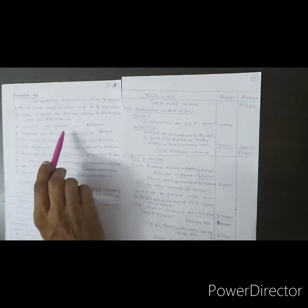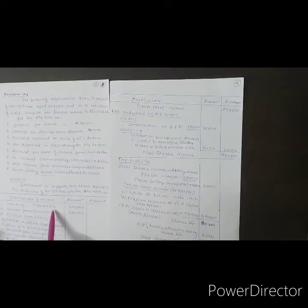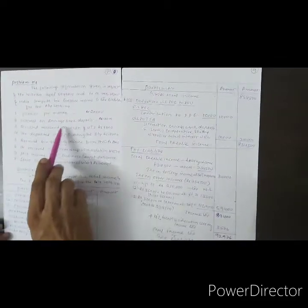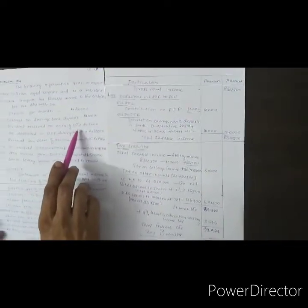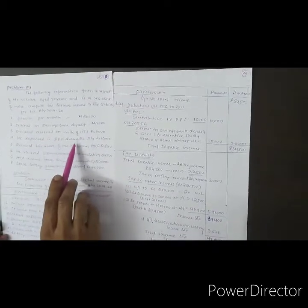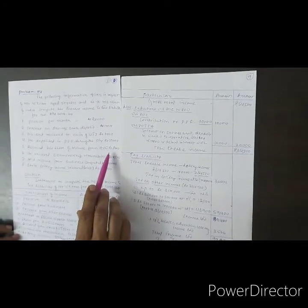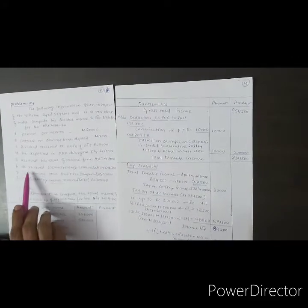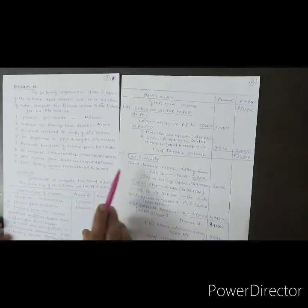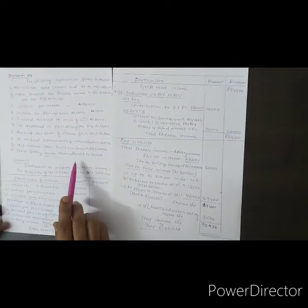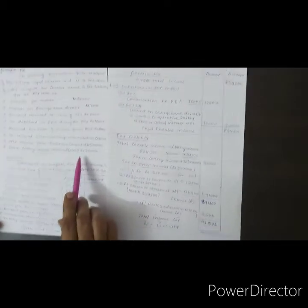Looking at the problem statement: pension per month is rupees 20,000, so annual pension is 20,000 into 12 months equals 2,40,000. Interest on bank deposit and interest on savings bank account comes under income from other sources. Dividend received from units of UTI is exempt from tax. Amount deposited in PPF during the previous year is 10,000, which comes under deduction section 80C. Share of income from HUF is exempt from tax. He received examiner's remuneration of rupees 4,500, which comes under income from other sources. Income from business computed is rupees 5 lakhs. Lottery income received net amount is rupees 70,000 after 30 percent TDS. The gross amount becomes part of income from other sources.